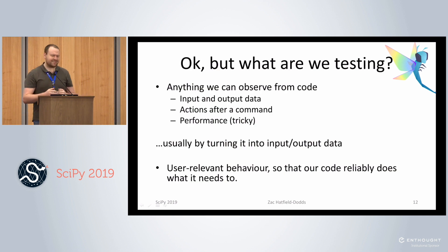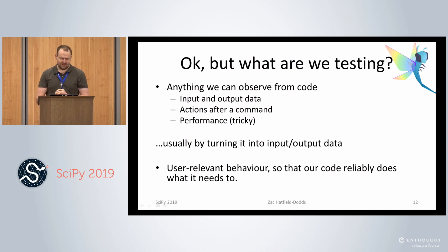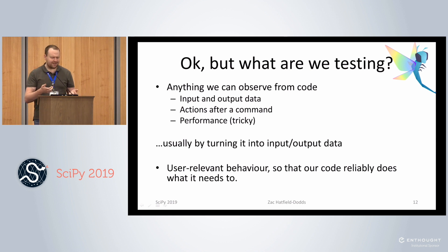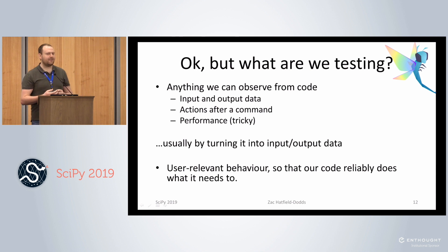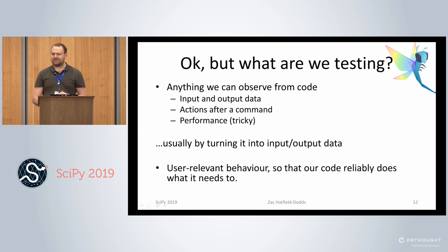What do we test? In short, anything you can observe from code — and if you're testing software, that's very many things. Typically, you turn your behaviour into some kind of input or output data. Most importantly, you want to be testing things which are actually relevant to your users — maybe that's you, maybe your team, maybe ensuring results are reproducible. We don't want to test details no one cares about; we want to spend effort testing the things that are important.